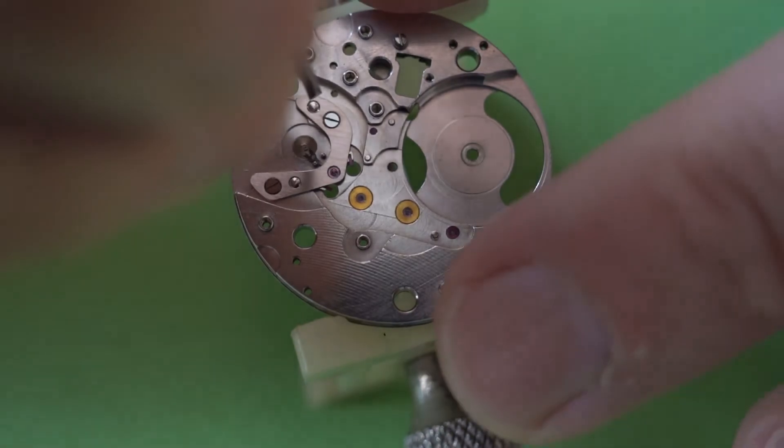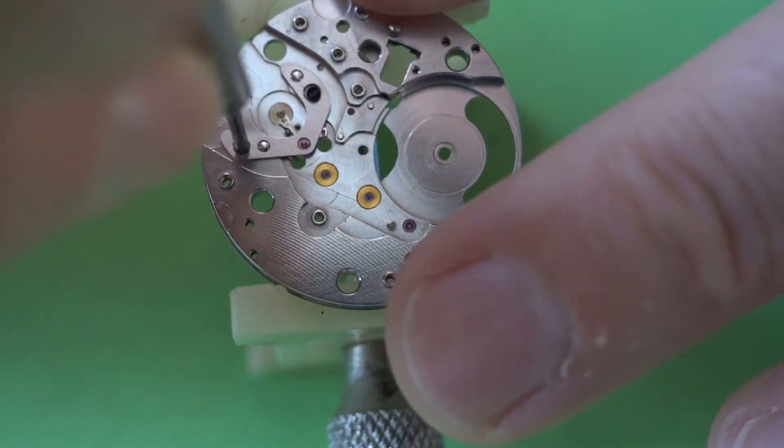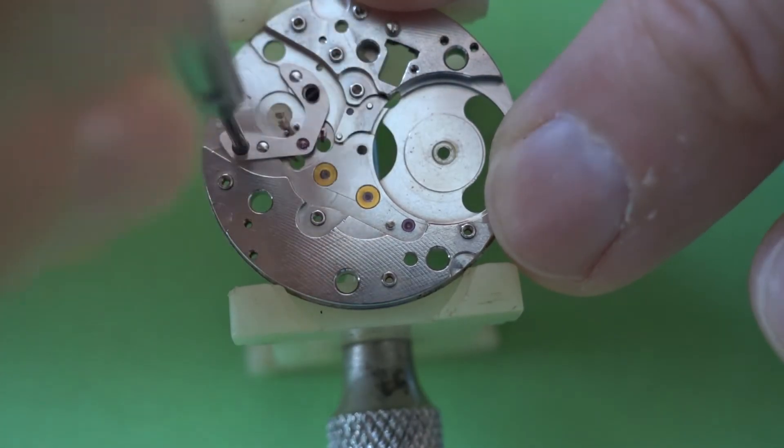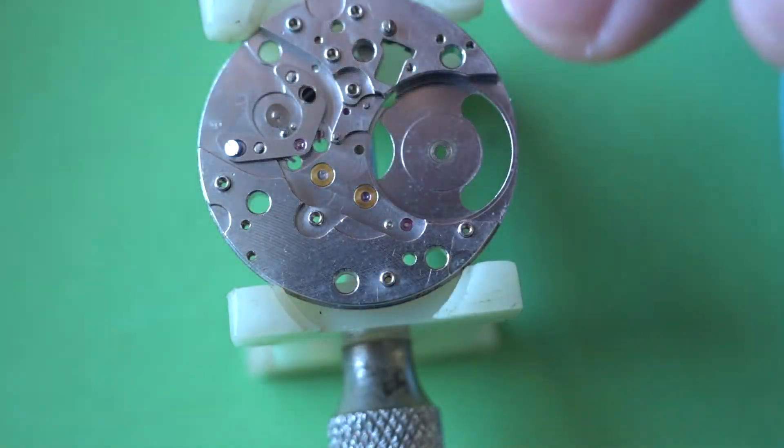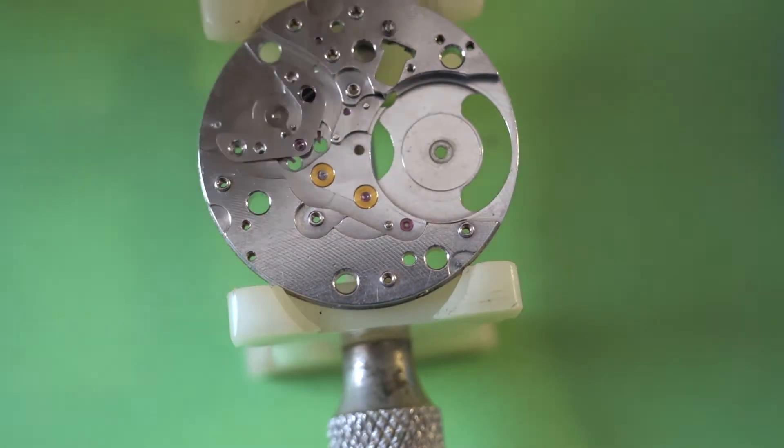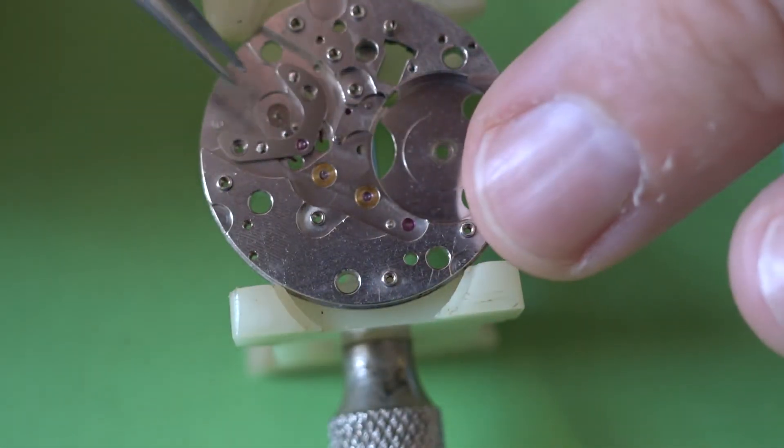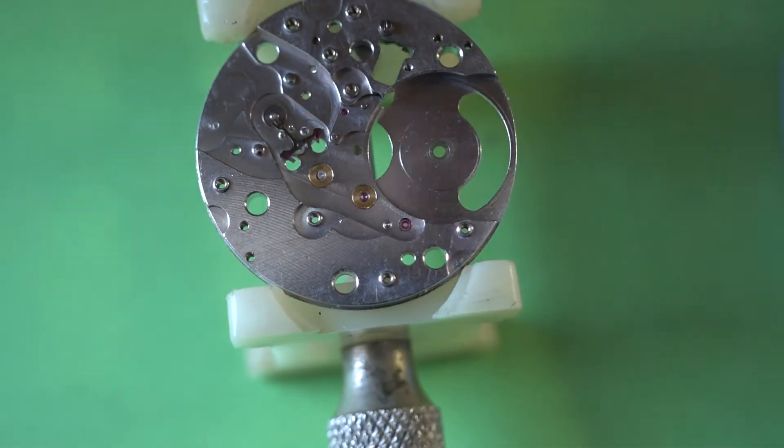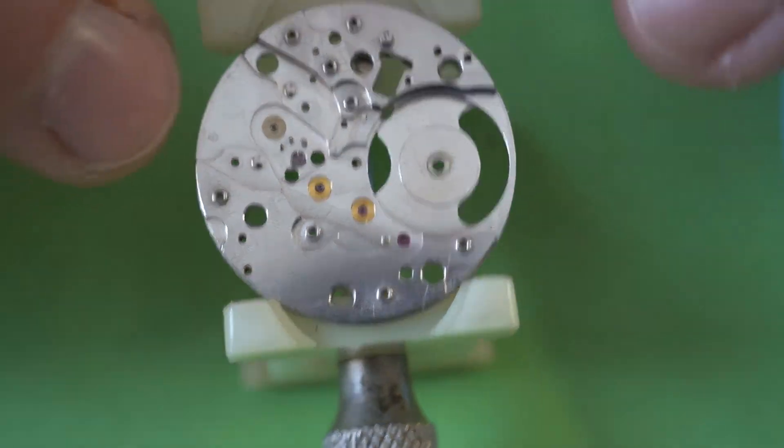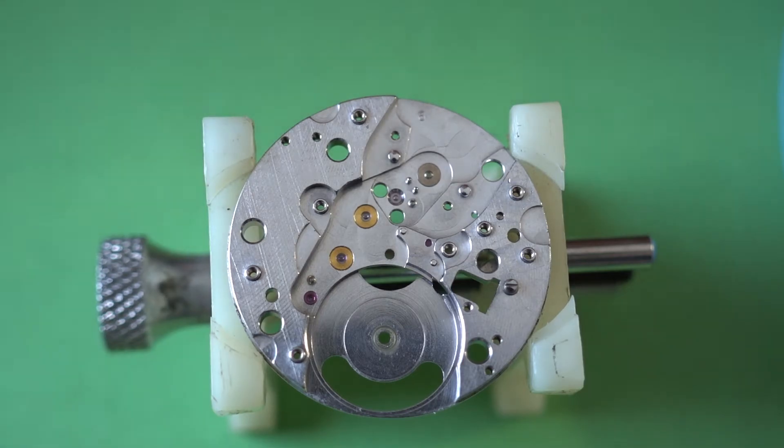I reckon I'm just changing screwdrivers there and now we're just taking off the pallet bridge, and that's just about the last part on here. It's a fairly simple movement. And the bridge is off and then all we have left is the pallet fork. So there's really nothing remarkable about the pallet fork either, it's not a funny shape or anything, it's very traditional. And then we have the complete plate.